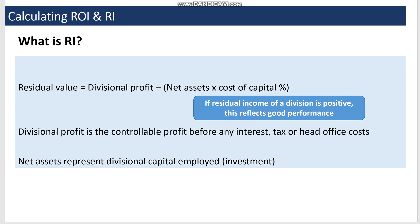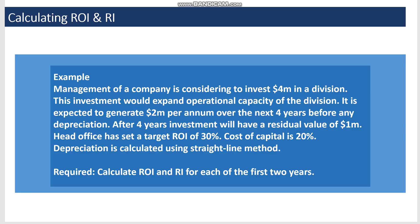Let's look at an example. Management is considering investing 4 million dollars in a division to expand operational capacity. It is expected to generate 2 million dollars per annum over the next four years before depreciation. After four years, the residual value will be 1 million dollars. The target ROI is 30% and the cost of capital is 20%, with depreciation calculated using the straight-line method.